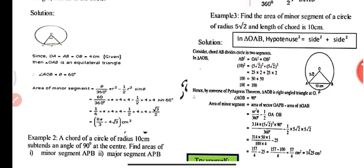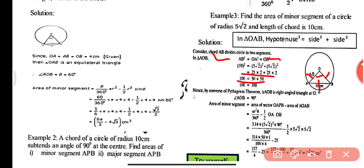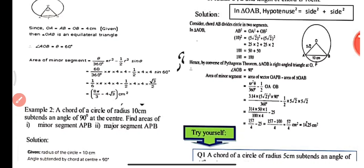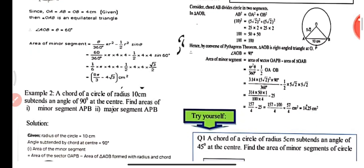Example 3: Find the area of the minor segment of a circle of radius 5√2 cm where the chord AB = 10 cm. First we find the angle at center using the Pythagorean theorem: AB² = 10² and OA² + OB² = (5√2)² + (5√2)² = 100, confirming triangle AOB is a right triangle with angle AOB = 90°. So area of minor segment = (θ/360)×πr² − ½ × base × height = 14.25 cm².